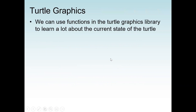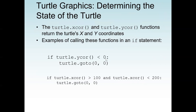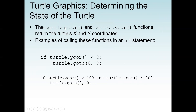We can use functions in the turtle graphics library to learn a lot about the current state. We have turtle.xcor() — xcor stands for the x coordinate, so the xcor function returns the x coordinate. Then turtle.ycor() is the y coordinate function and returns the turtle's x and y coordinates.